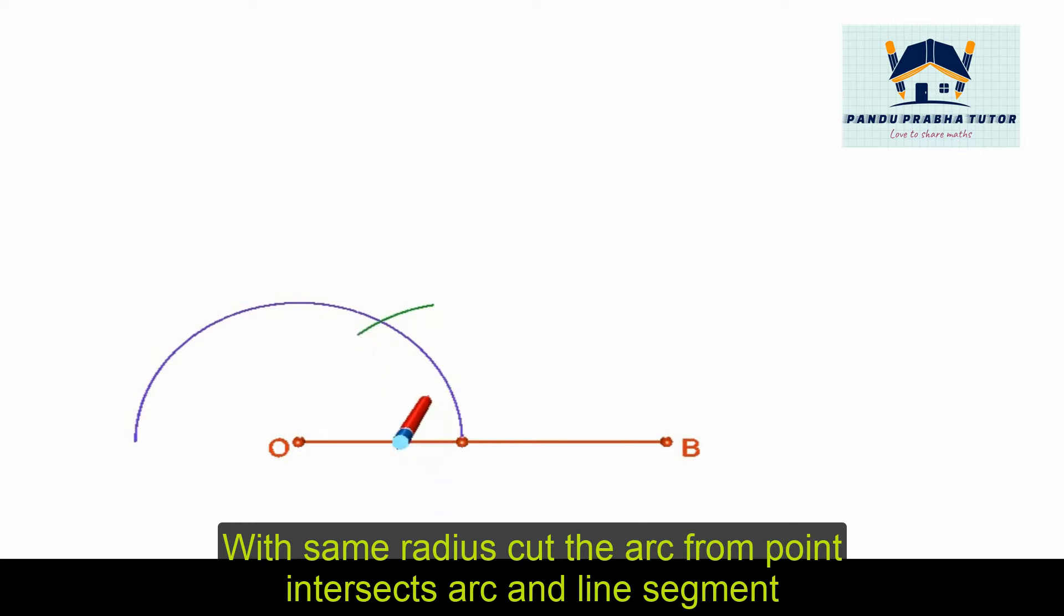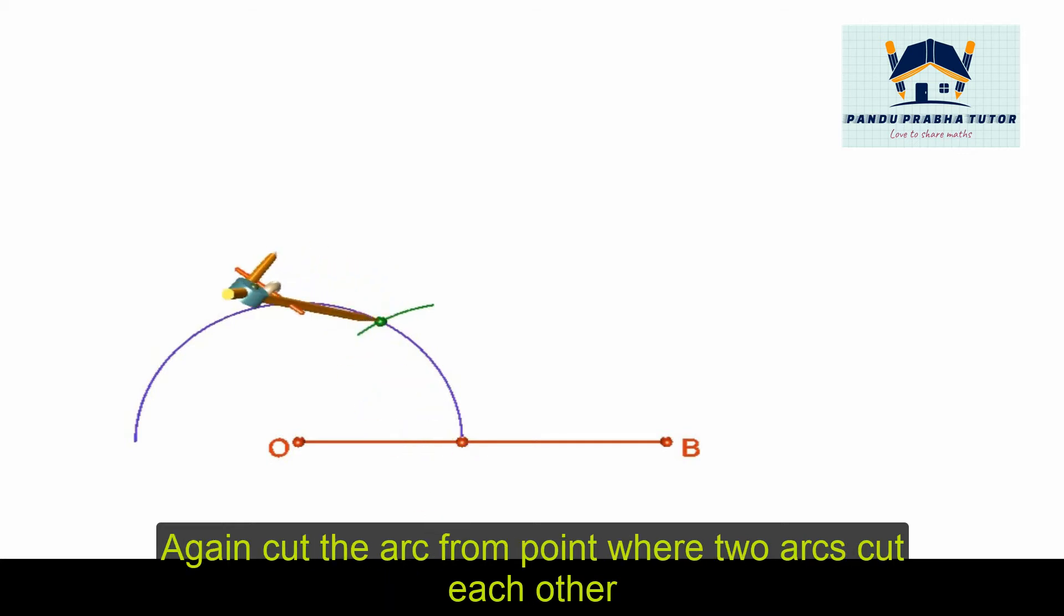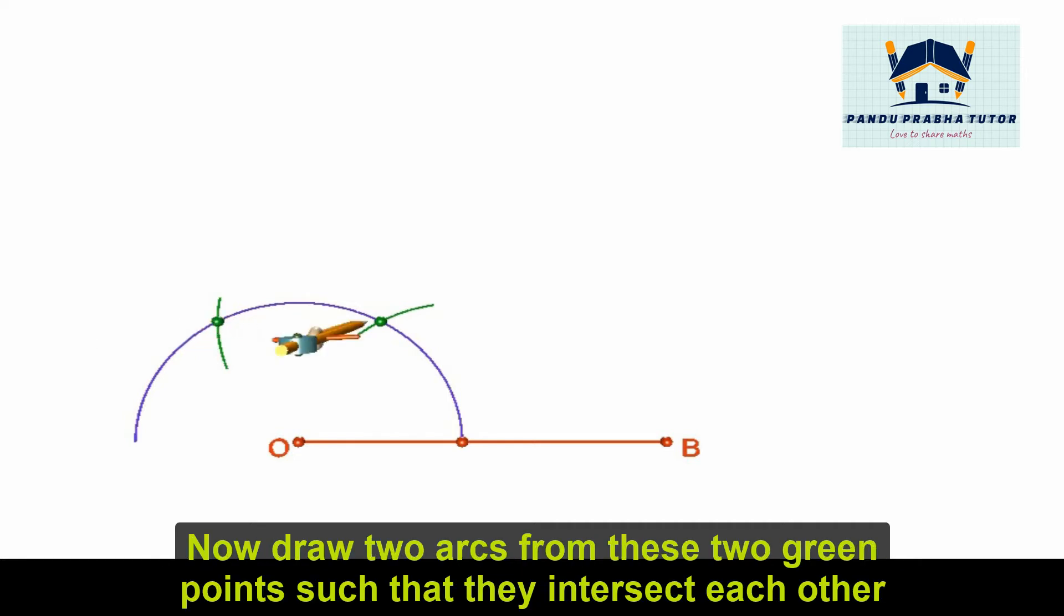Now mark the point where these two arcs intersect. Now again, cut the first arc with same radius from this point. Mark the point. Now with the same radius, draw two arcs above as shown in this video.